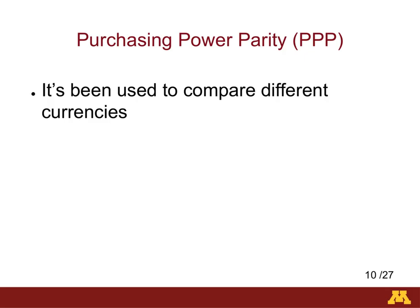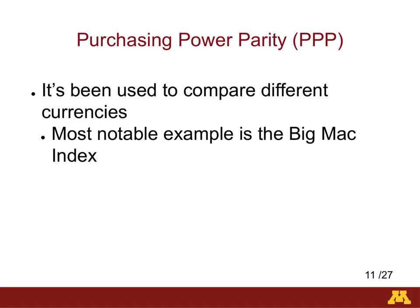Purchasing power parity theory comes from the field of economics. It makes it possible to compare similar products in different countries by computing how much each currency is buying you in terms of similar products. The most well-known example is the Big Mac index, introduced by The Economist magazine in 1986 to compare different currencies using a Big Mac burger as a comparison product. When the Big Mac index is compared with the currency exchange rate, it gives an indication of the extent to which the currency is undervalued or overvalued. Big Macs were adopted as a benchmark because they are widely available across the world and the ingredients are relatively standardized.